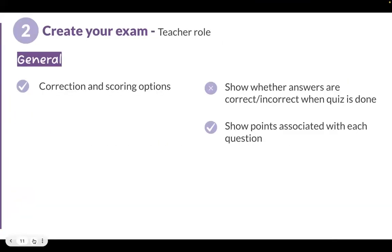Under the General tab, take a look at correction and scoring options — specifically whether answers are shown when the quiz is done. Because it's an exam, you probably don't want to reveal the correct answers, since period one students could potentially share them with period three. You can enable whether answers are shown as correct or incorrect without revealing the answer itself, and also show the points associated with each question. You can customize this according to your students and grading practices.